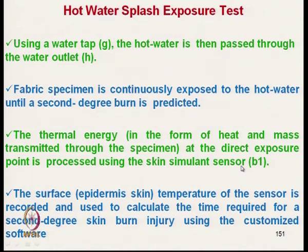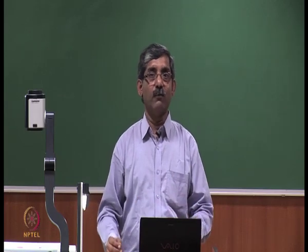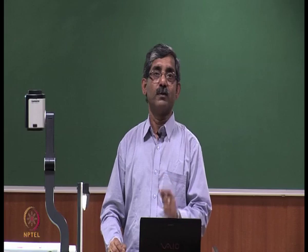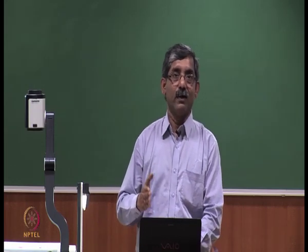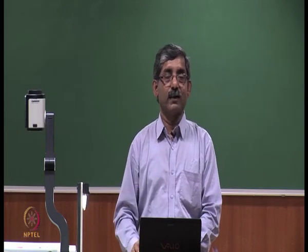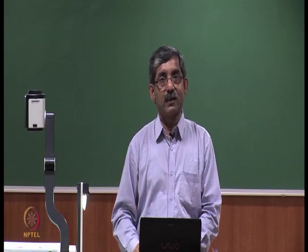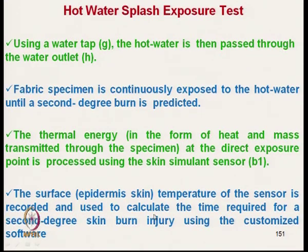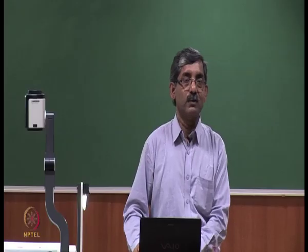Sensor B1 provides the direct exposure time data, while B2, which is away from B1, gives the second degree burn prediction away from the direct splashing place. The surface temperature of the simulant sensor — representing the epidermis — is recorded and used to calculate the time required for a second degree burn using customized software.